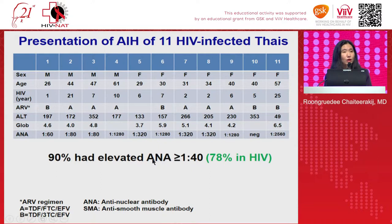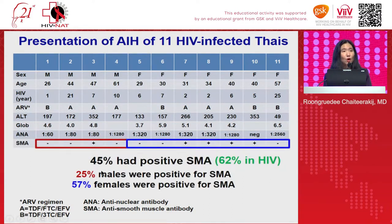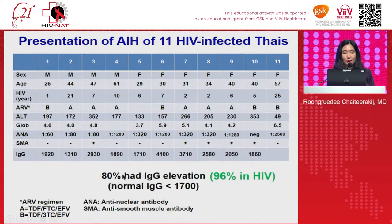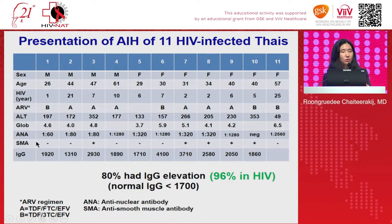Ninety percent of patients had elevation of ANA, which is much higher than previous HIV cohort reports. One interesting finding different from previous reports is that in the Thai cohort, positive SMA — smooth muscle antibody — was quite low, just 45%, compared to 62% in the previous report. When categorized by gender, only 25% of males were positive for smooth muscle antibody, while 57% of females were positive. For IgG elevation, 80% were positive. So if you suspect AIH in an HIV patient, you can do screening tests of ANA, smooth muscle antibody, and IgG.